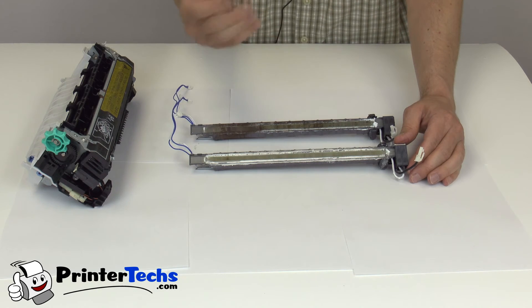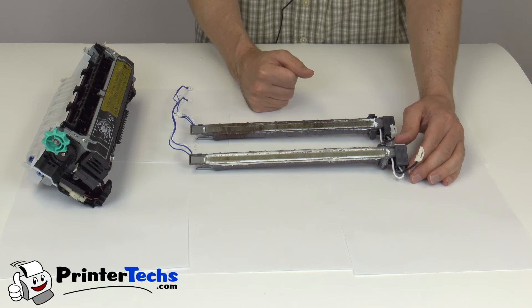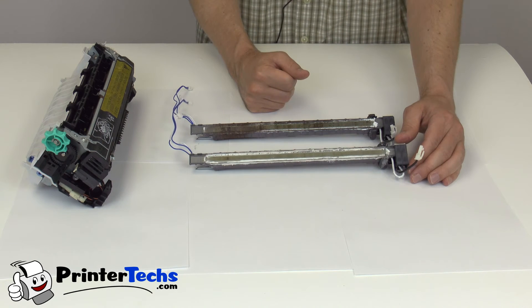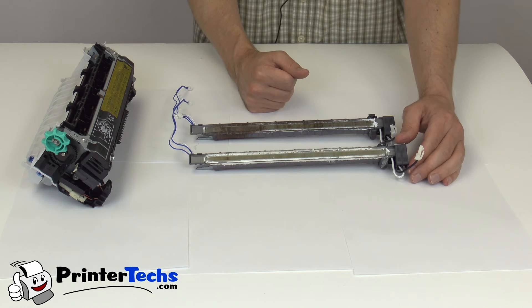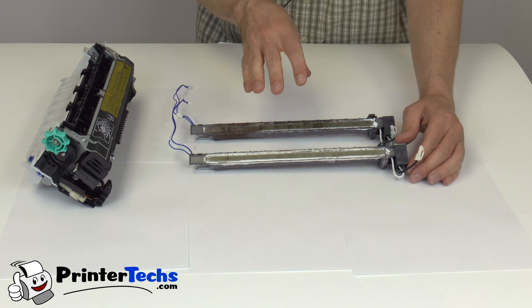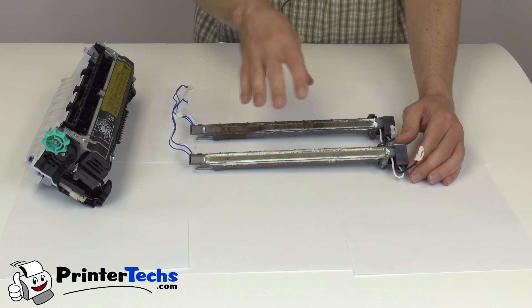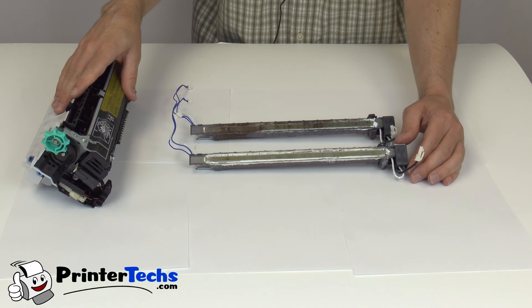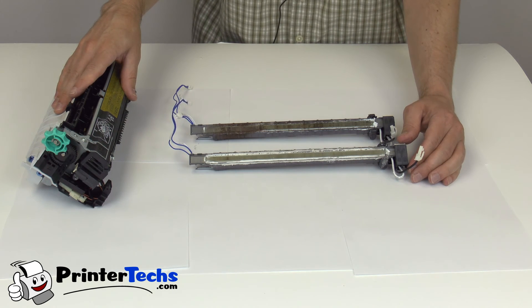And a lot of our competitors use grease that you'll be lucky if you get 100,000, 150,000 pages out of it. So those are a couple of technical reasons or technical things that we do to improve our HP LaserJet 4200 fusers.